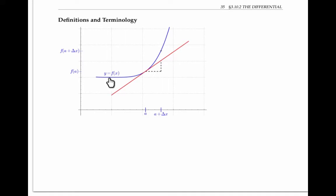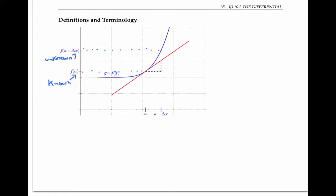Suppose we have a differentiable function f of x, and we know the value of f at some x value a — that is, we know the value of f of a. But we don't know the value of f at some nearby x value, a plus delta x. So we draw the tangent line to f of x at x equals a, and we use the tangent line at a plus delta x as an approximation for the function at a plus delta x.